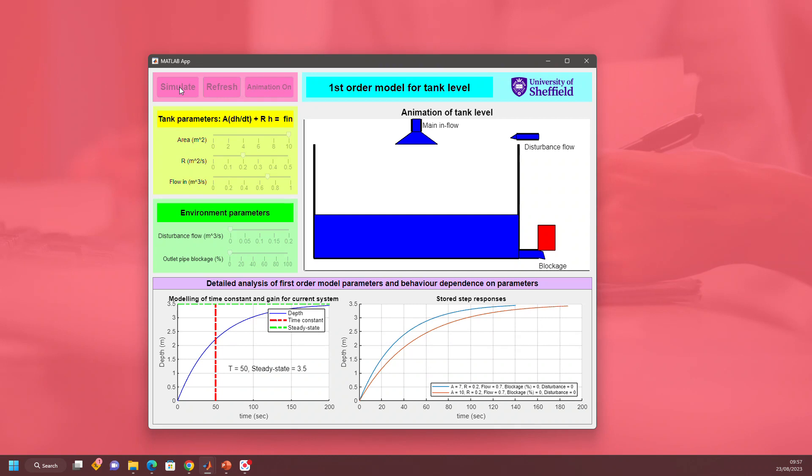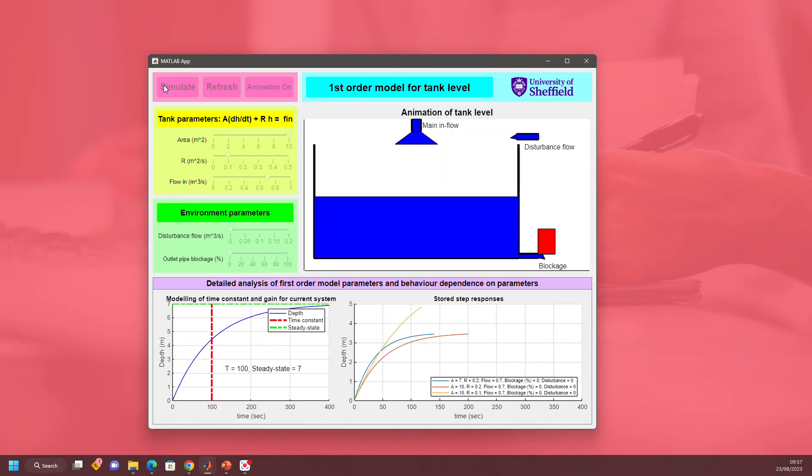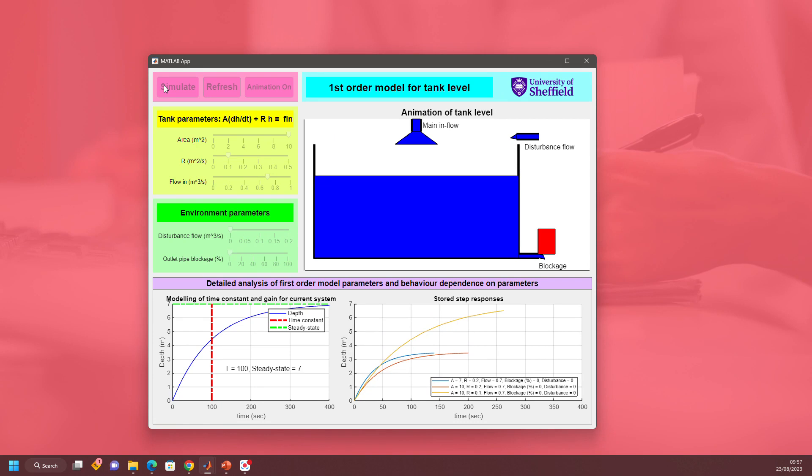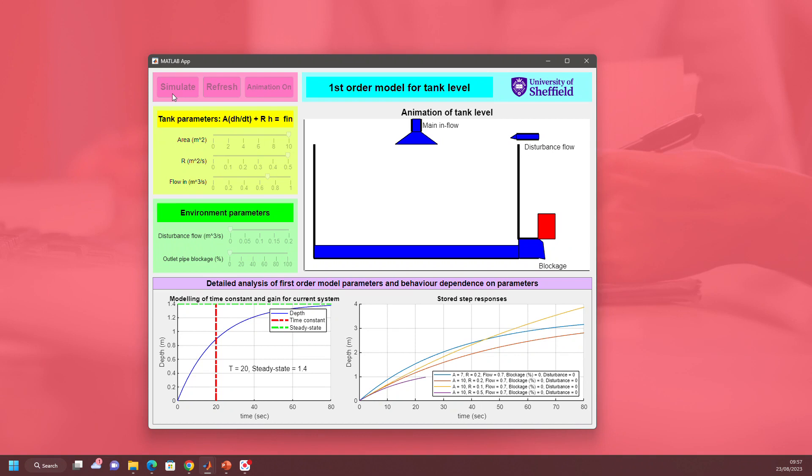It fills up more slowly but gets to the same depth. What happens if I change R? I've made the outlet pipe a bit thinner. It fills to a deeper depth - is that what you expected? What if I make R very big? The whole point here is it's easy to visualize what is happening.